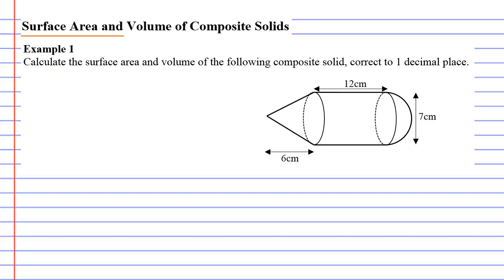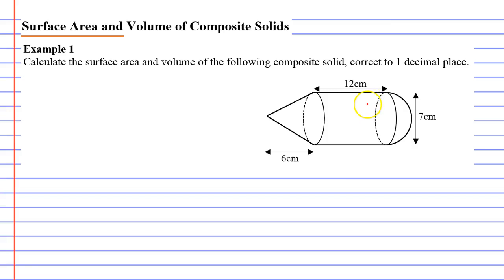Surface area and volume of composite solids. We're going to calculate the surface area and volume for this composite solid here. It's called composite because it's composed of several pieces or several shapes.